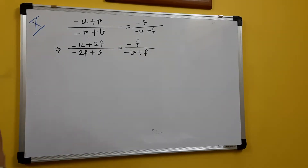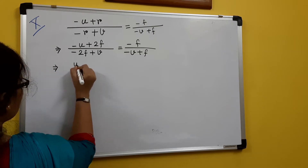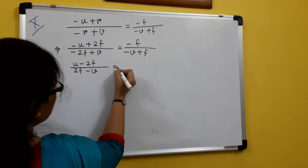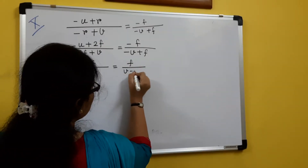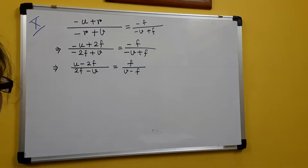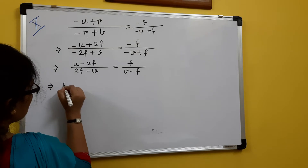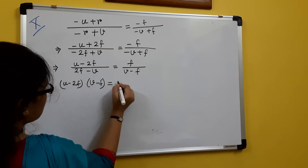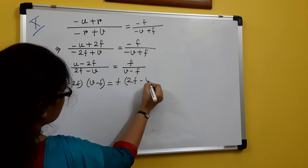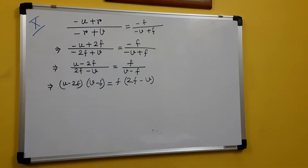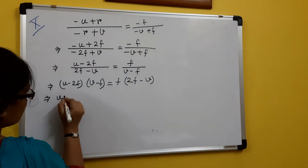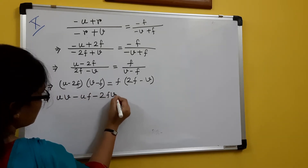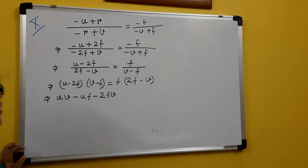Now, cancel out all the minus signs. So, I will have u minus 2f over 2f minus v, equal to f over v minus f. Now, I will do the cross multiplication. That is, u minus 2f into v minus f, and here f into 2f minus v. If I do the multiplication, I will have uv minus uf minus 2fv.